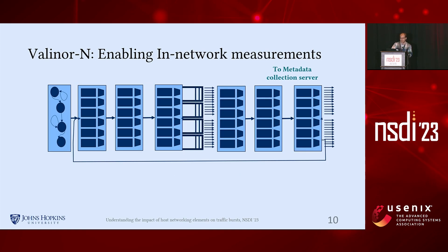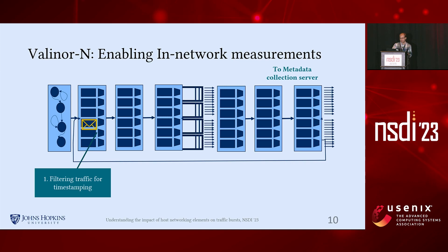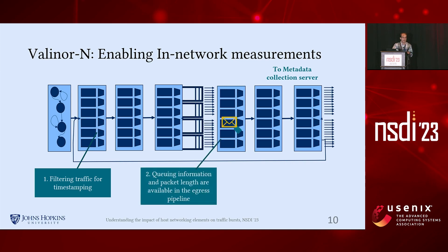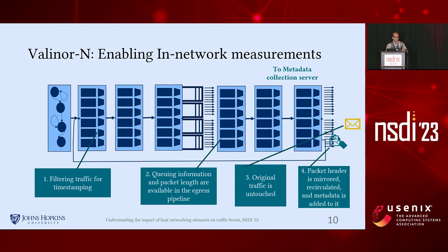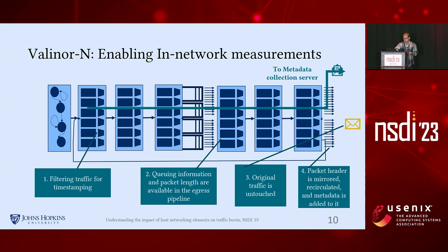The second part of Valinor's design is the network component in the programmable data plane. Arriving packets are filtered first using match-action tables. However, since most packet metadata is only available at the egress pipeline, the majority of Valinor's functionalities are implemented there. Valinor does not touch the contents of original packets as they pass through the data plane. Instead, it creates a mirror of their headers, adds timestamp and metadata information, and recirculates them to ultimately forward them to the collector machine.